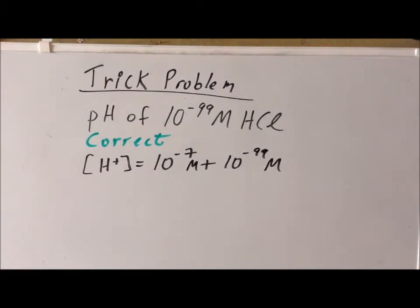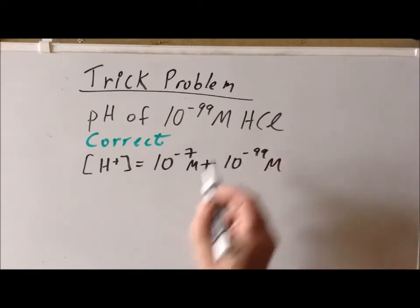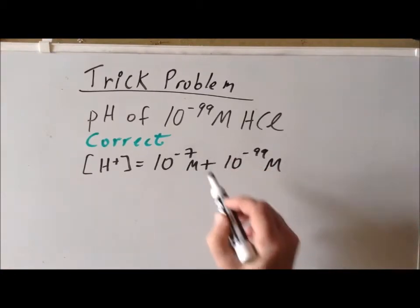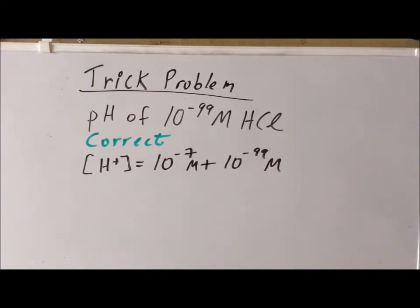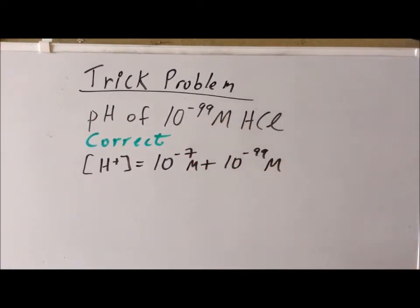One thing to notice here is that 10 to the minus 99 is a vanishingly small value, particularly compared to 10 to the minus 7. In fact, 10 to the minus 99 is so small that we could imagine it to be zero. It's almost as if we have a 10 to the minus 99 molar of hydrochloric acid. We actually have virtually no acid in our solution at all.